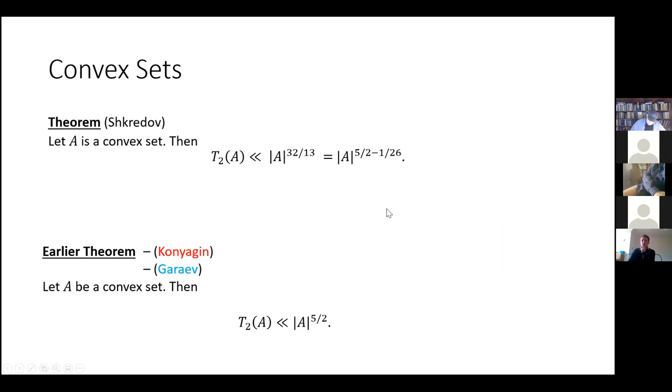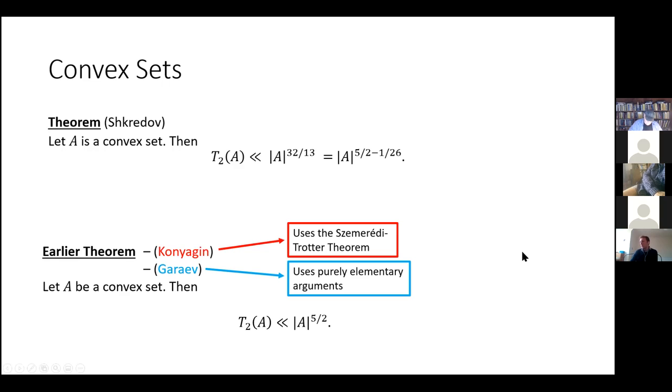So the original bound was that if A is a convex set, then the T two energy is bounded above by size of A to the five over two. And this is going to be particularly relevant to us because this is where the research that we did kind of starts from. And there are two sort of independent proofs of this from the early two thousands, one due to Konyagin and one due to Gureyev. And because their methods are so different, that's why I've included them in different colors and in different parentheses. So Konyagin's approach used basically incidence geometry, Szemretti-Trotter theorem, whereas Gureyev's approach uses purely elementary combinatorial arguments.